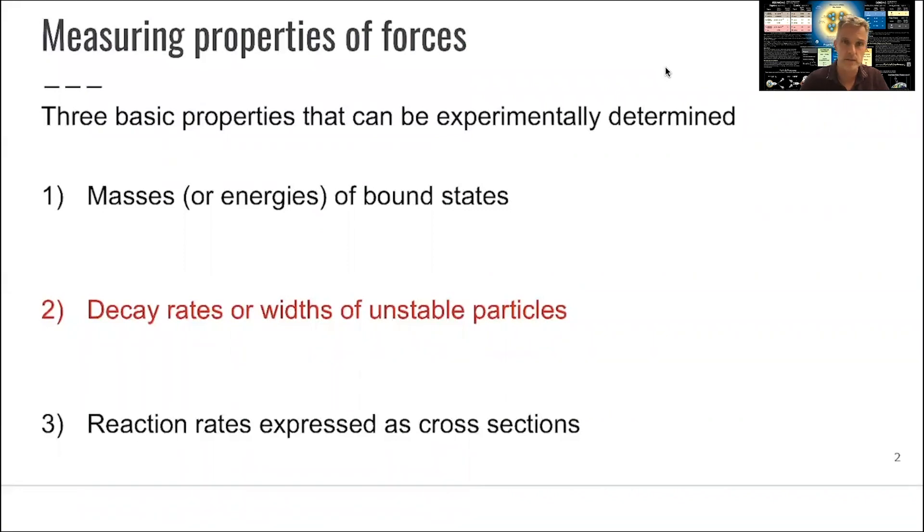The first one is masses of bound states. You might remember from atomic physics that you learn a lot about the electromagnetic interaction by studying, for example, the hydrogen atom, where you have an electron circling around the proton.